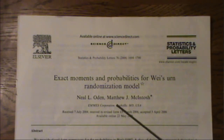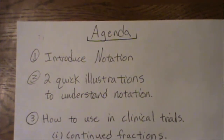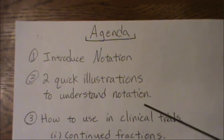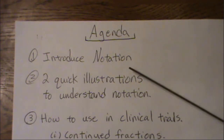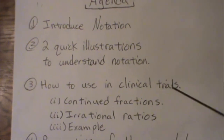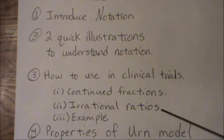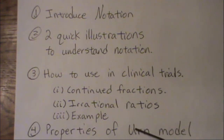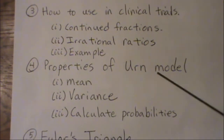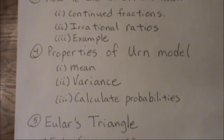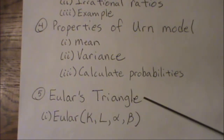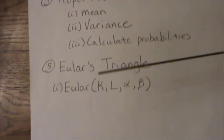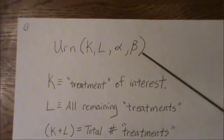We'll also cover its connection with Euler's triangle. The brief agenda: we're going to introduce some notations, go through two quick illustrations for this notation — how to use it in clinical trials and use of continued fractions to develop any irrational ratio we want — go through an example, some of the properties of this urn model: the mean, the variance, calculating probabilities, and then its connection to Euler's triangle.